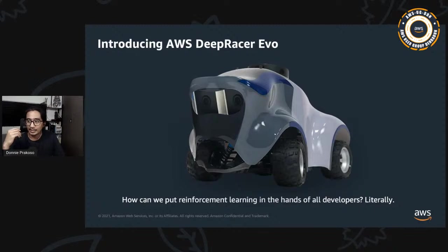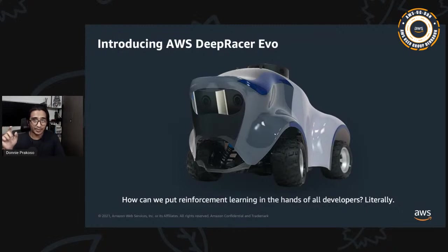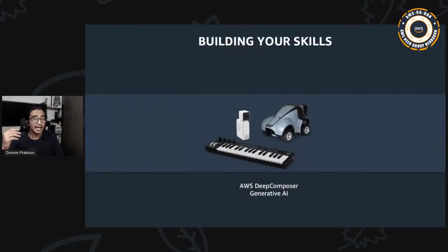AWS DeepRacer is a 1/18 scale robotic car which gives you an exciting and fun way to get started with reinforcement learning by applying it to autonomous racing. It was launched in 2018 to get developers hands-on with machine learning. What you see on screen is AWS DeepRacer Evo — the second generation in autonomous racing. The original DeepRacer had only a mono camera without LiDAR sensors. Since its launch, AWS DeepRacer has enabled tens of thousands of developers globally to learn and get hands-on with reinforcement learning.